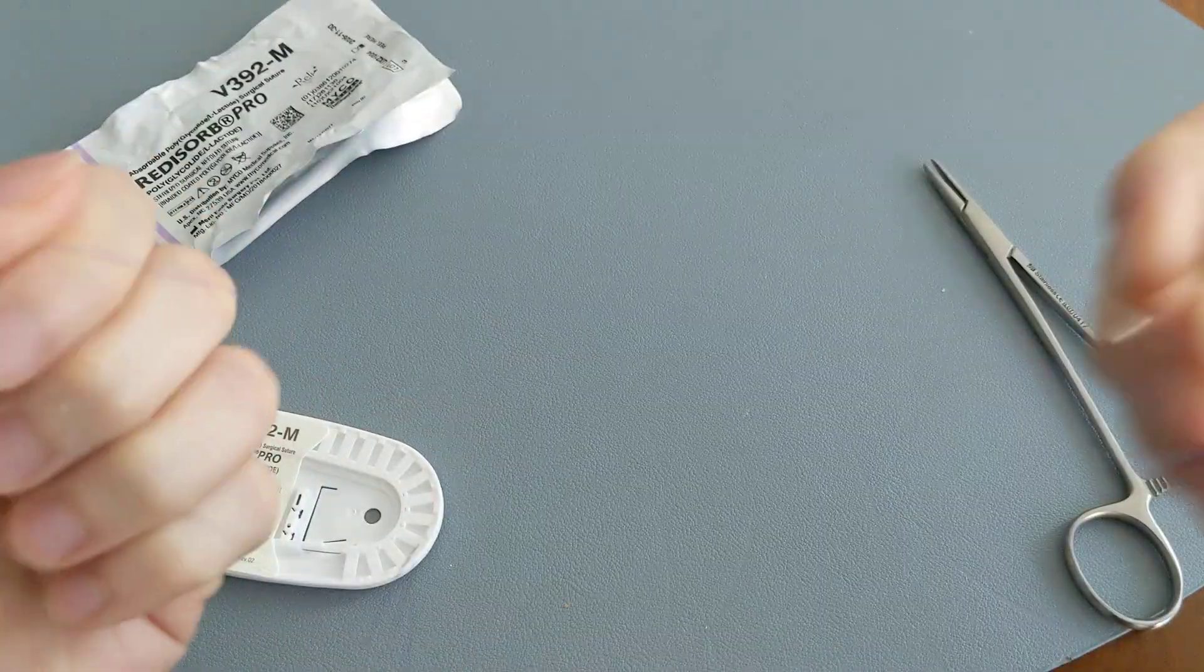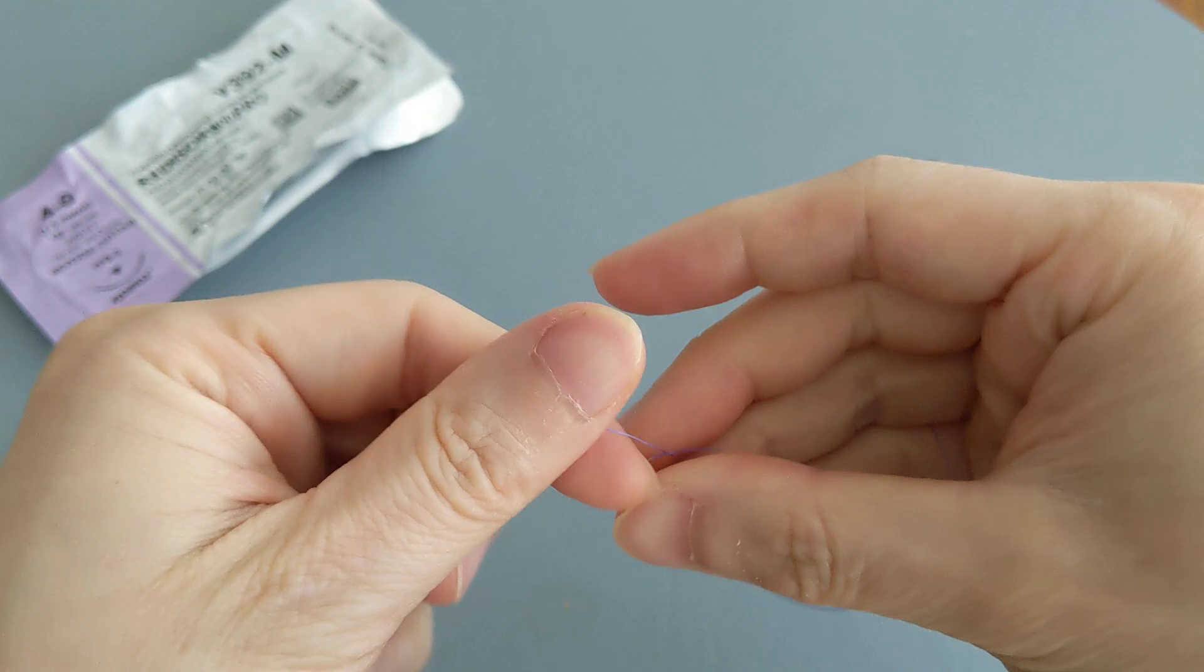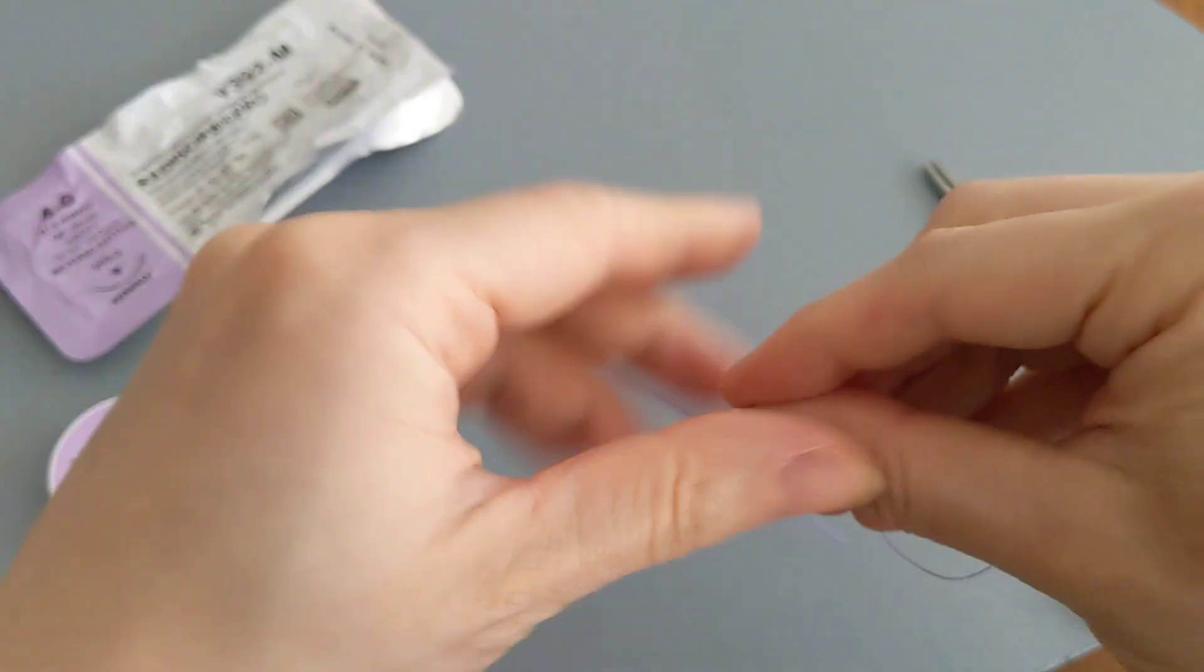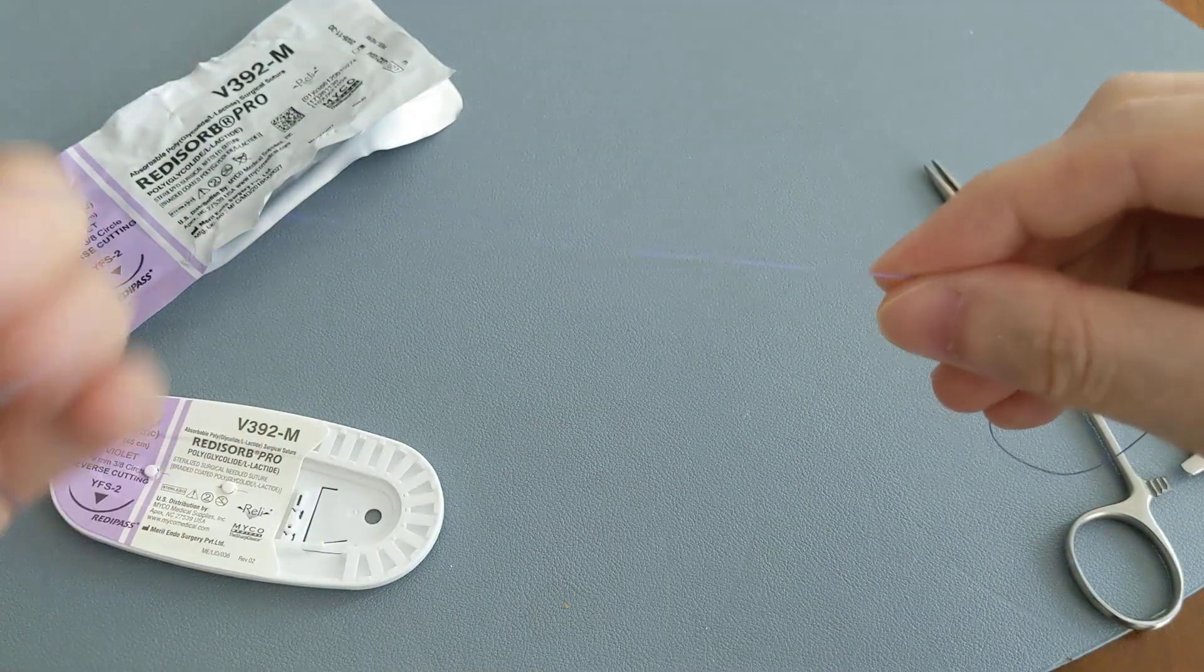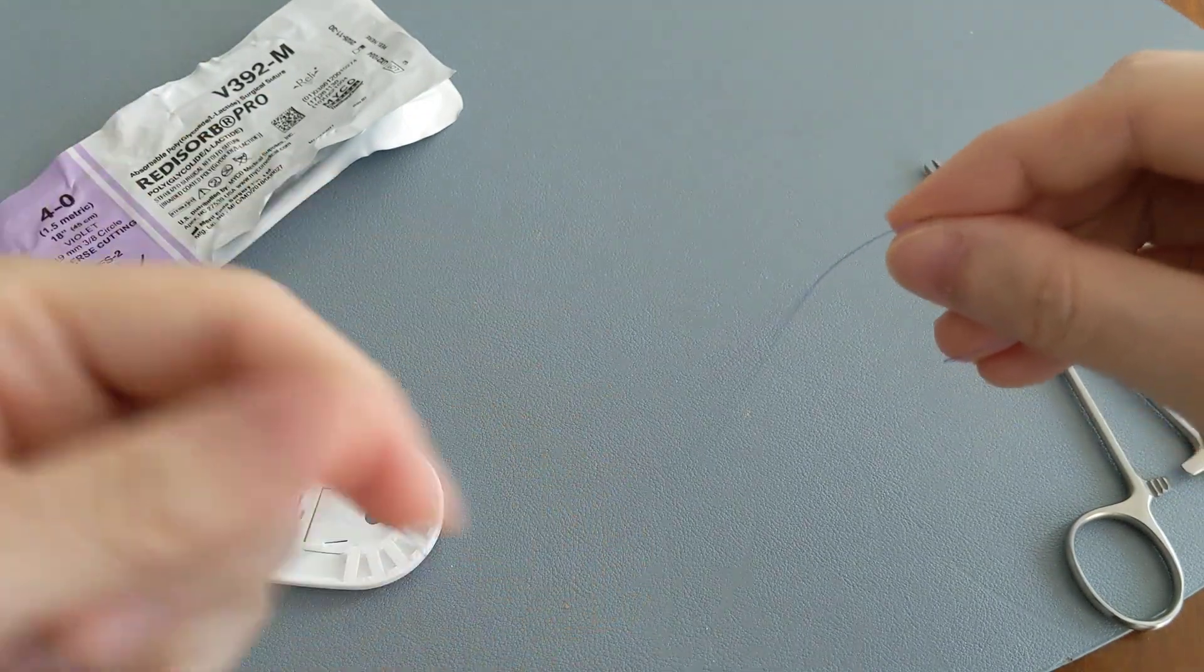So apparently purple stitches are dissolvable and they are made out of PGA. The texture feels pretty good in my opinion, although not quite as soft as the black silks which I do have here.